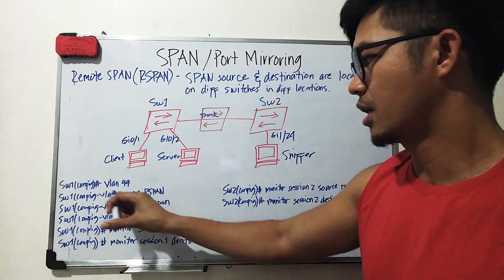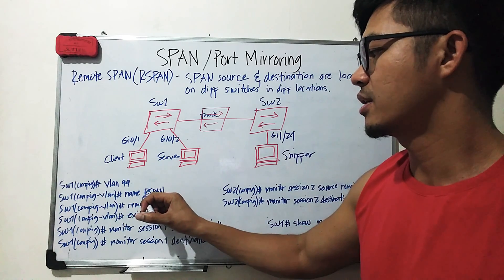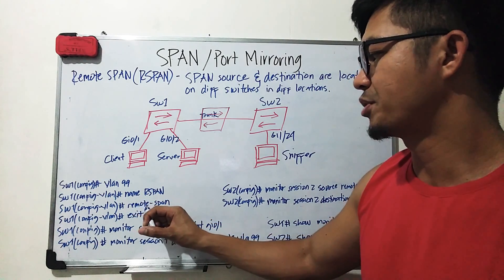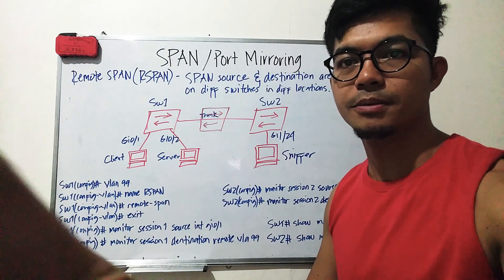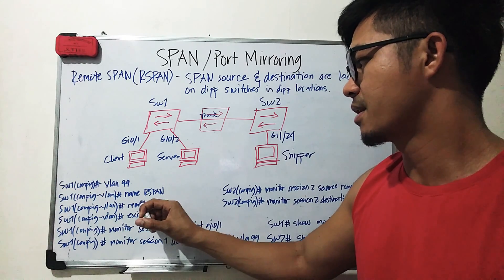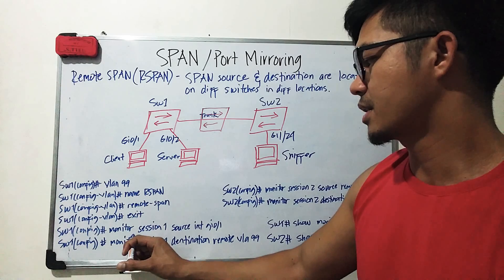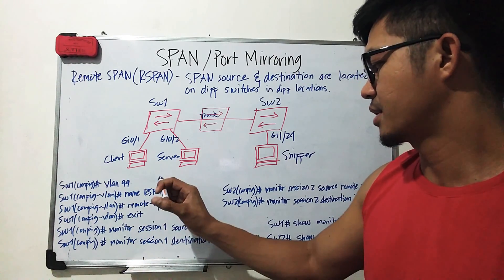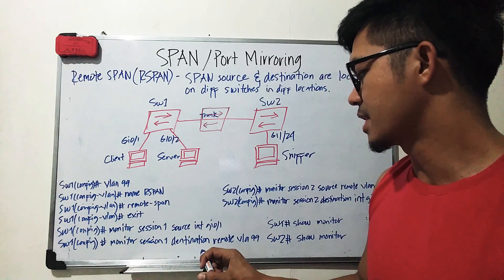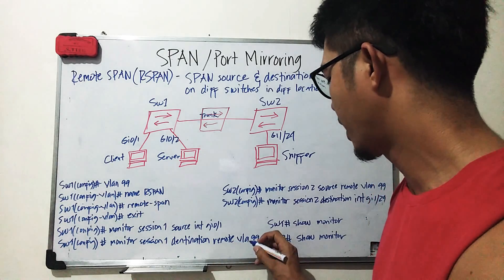You have to configure the VLAN. In this case, I'm using VLAN 99, and I'm naming it RSPAN just to make things easier to identify. This is important because this is where you actually declare that this VLAN is a remote SPAN VLAN. Then you configure the source port — in this case the client is connected to that port — and the destination is the remote VLAN 99.